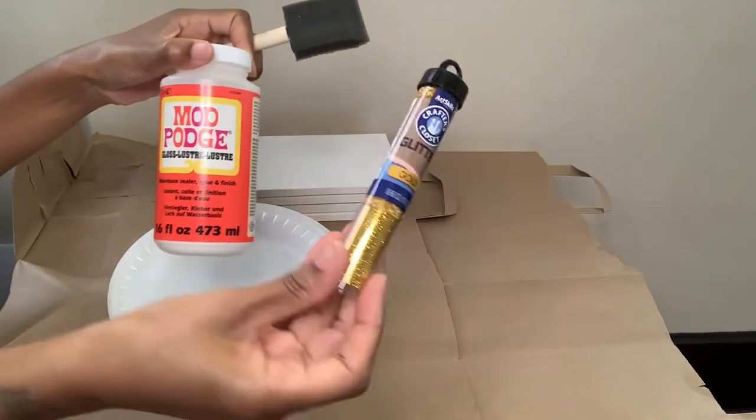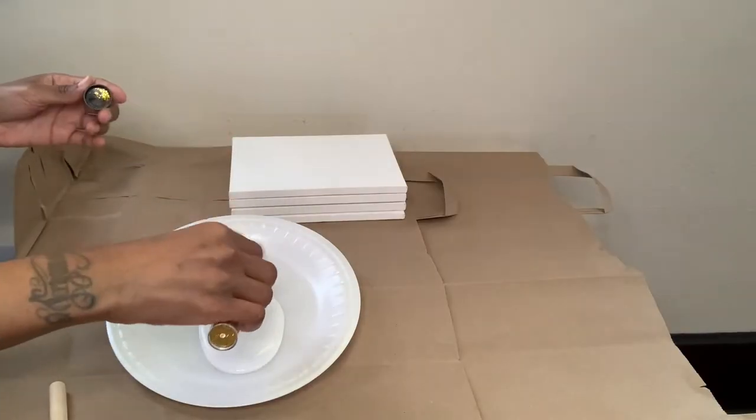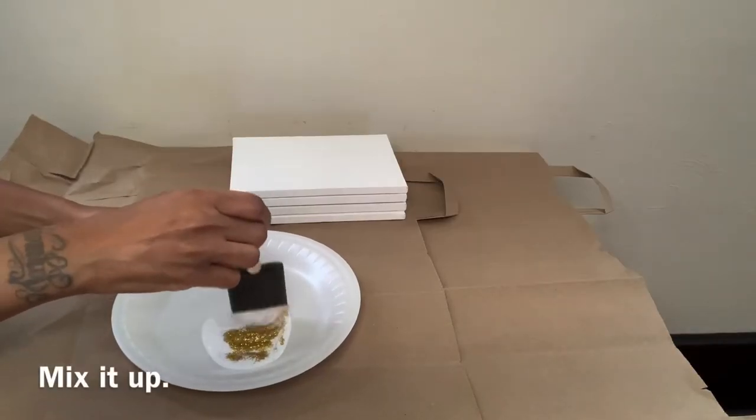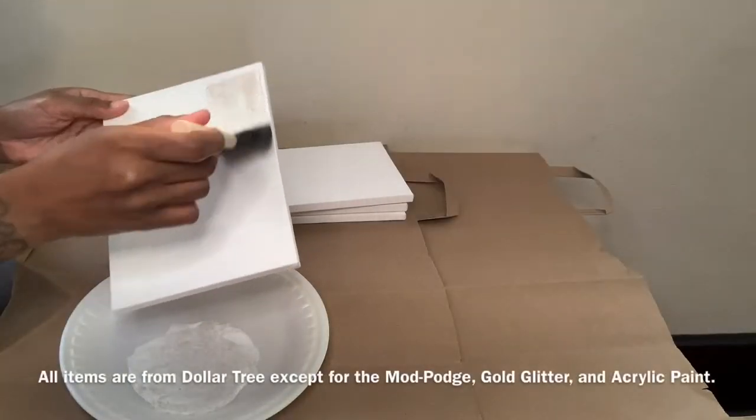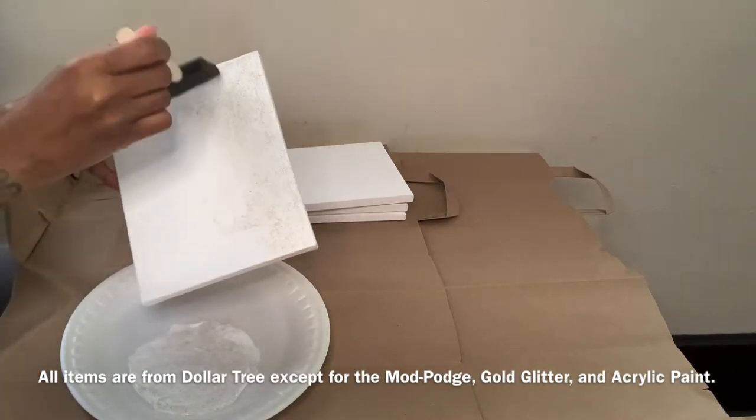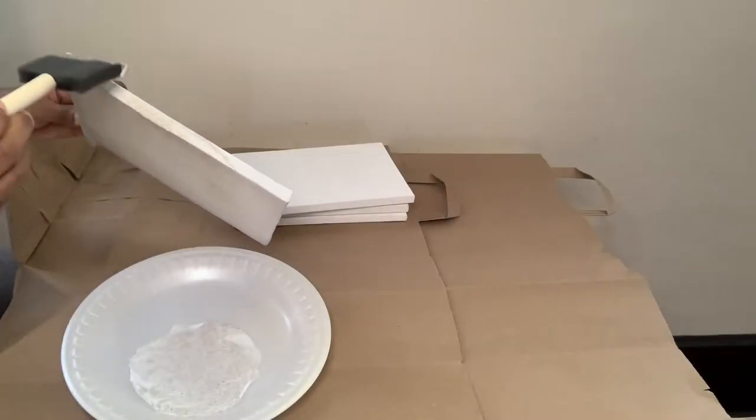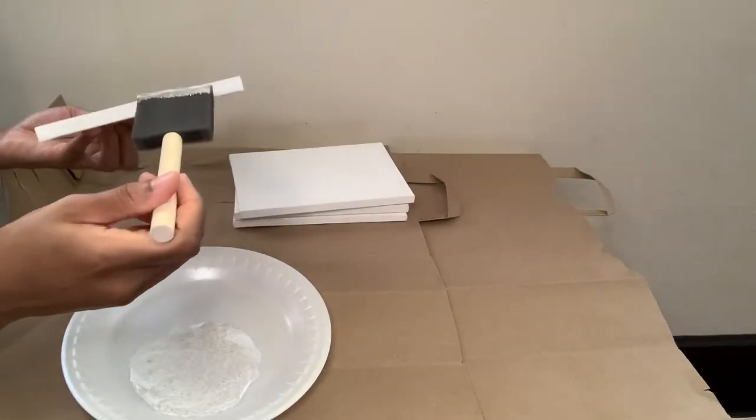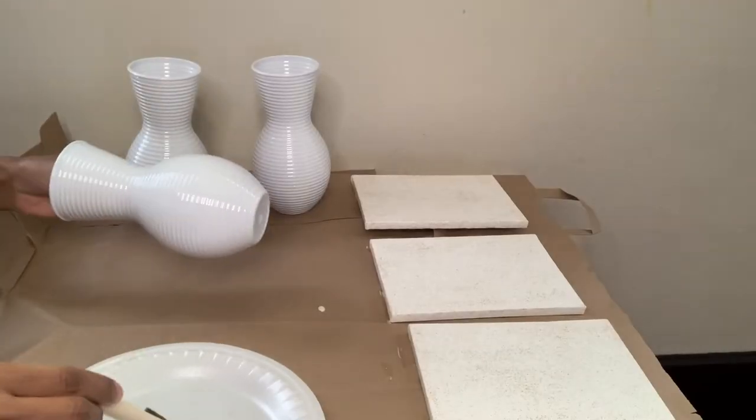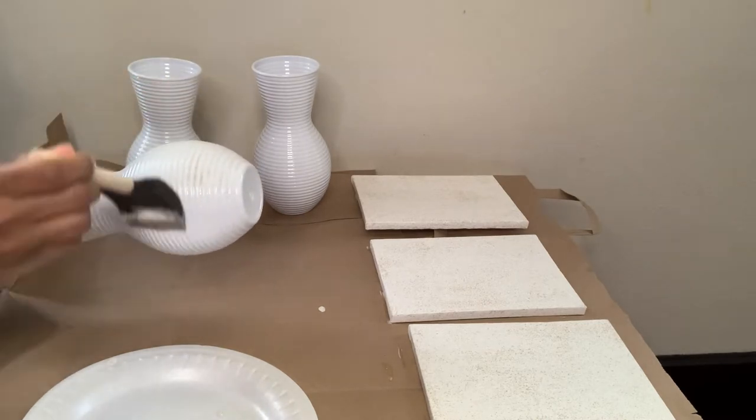Next, I'm taking my Mod Podge and my gold glitter and I'm creating a mixture for my canvases. I'm repeating the same exact steps for all three of my vases.